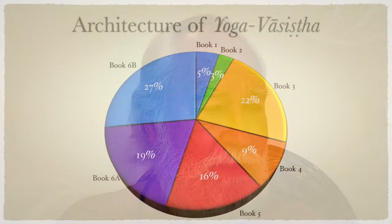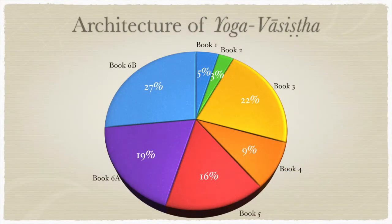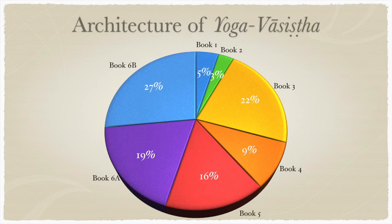Yoga Vasishta has six — well, actually seven — books. Book One, which we just finished, is only five percent of the total. Book Two is even smaller at three percent. Books Six and Seven together are almost half of the total, so the actual core is the final book. This makes it all the more important to be well grounded in the previous books before attempting them.